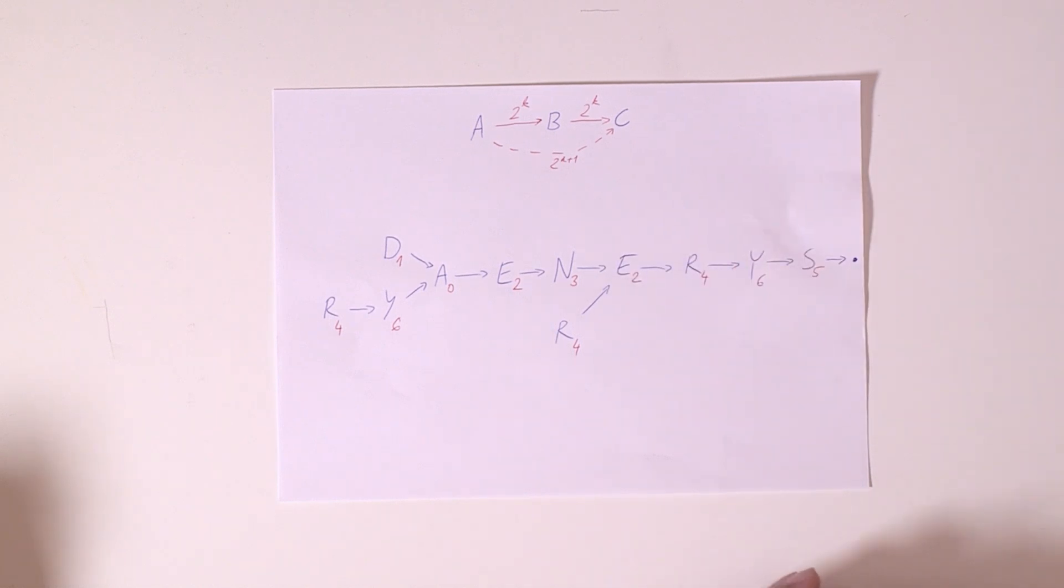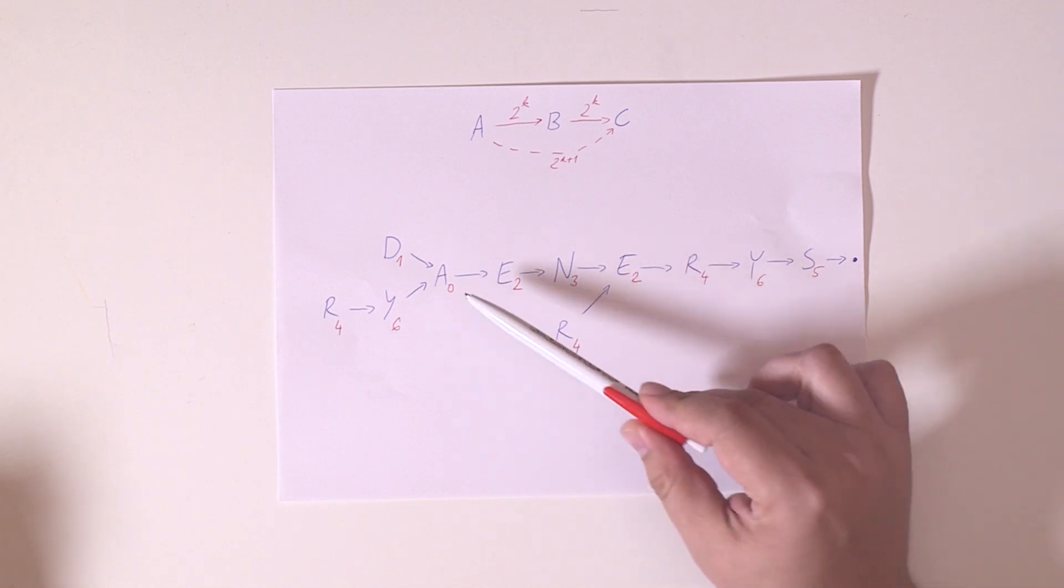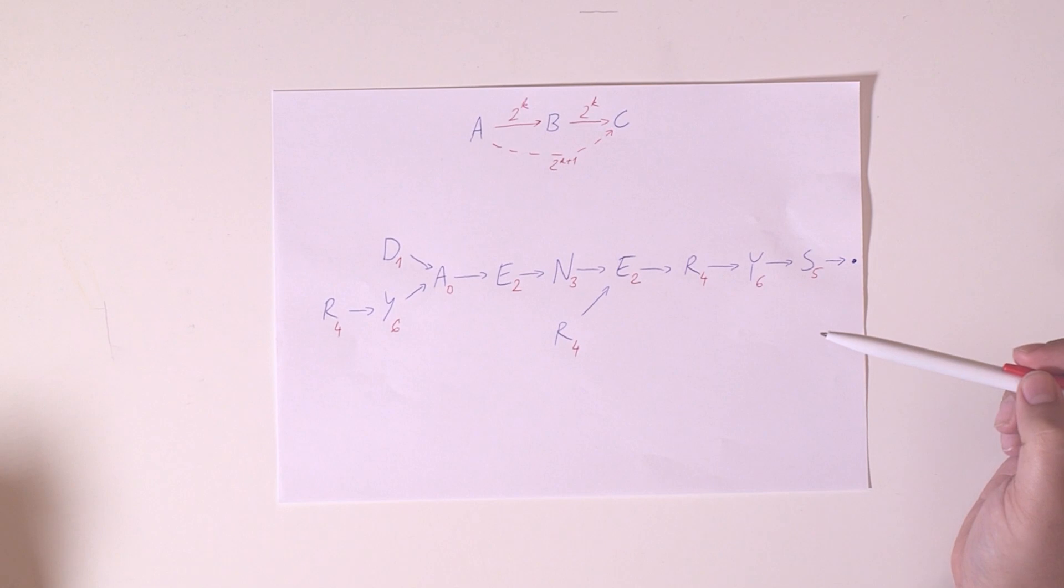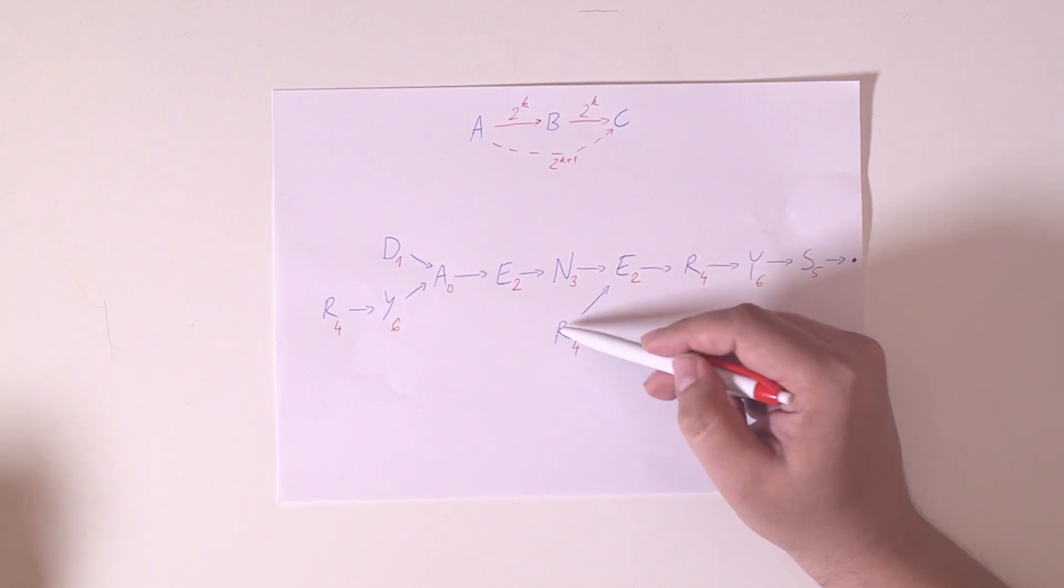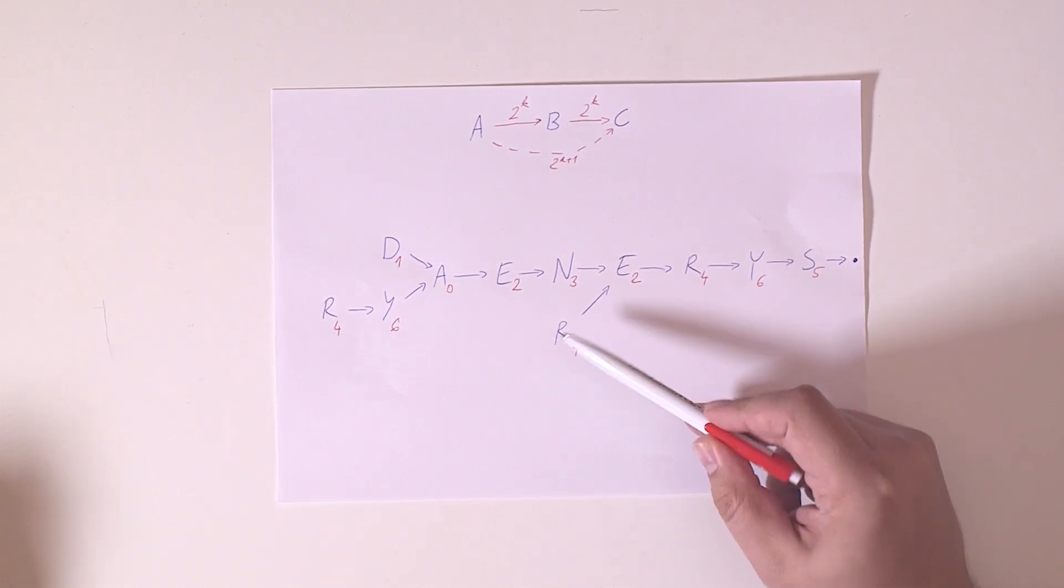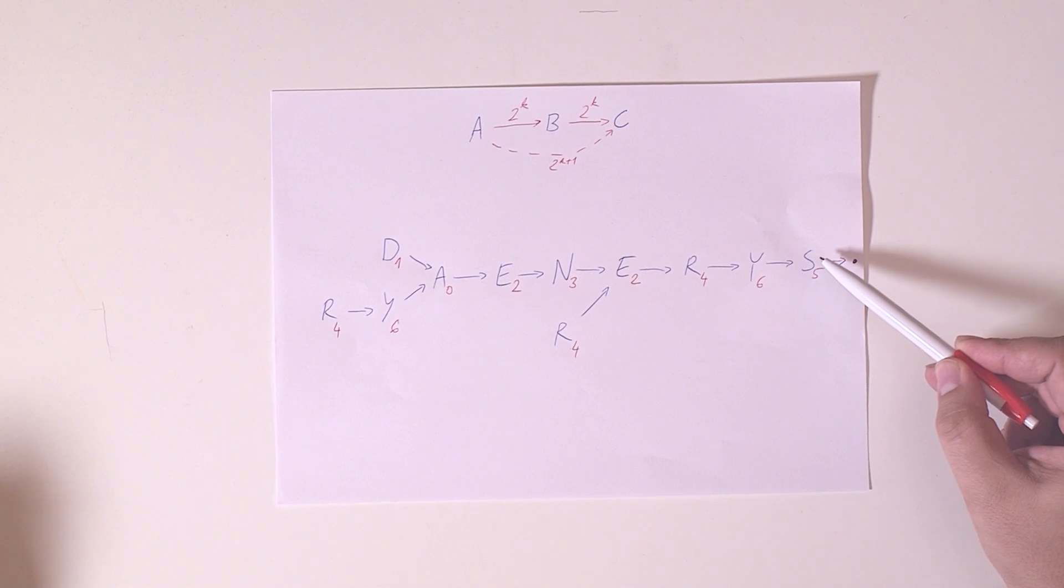But now we want to double the size of this sorted prefix in each iteration. So whenever we have a situation like this that we have the names of the queens sorted according to the first two to the k letters of their name, here's what we can do.